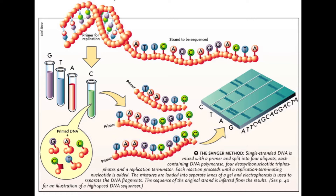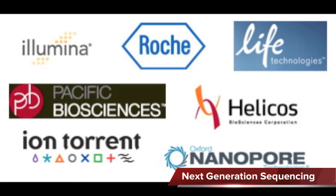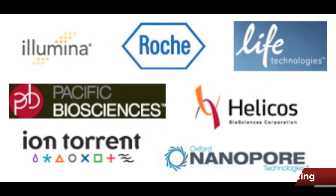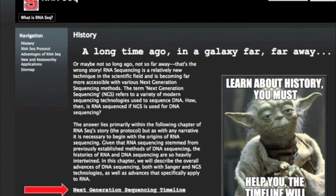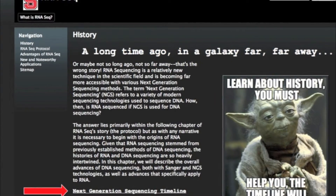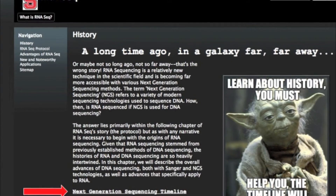One thing is for sure, though: RNA-seq got a strong push forward thanks largely to the development of next-generation sequencing technologies starting in 2005. Next-generation sequencing is an umbrella term for various modern-day sequencing technologies such as Illumina, Roche 454-seq, and Ion Torrent-seq. To find more details on the history of RNA sequencing, visit the timeline on our webpage.